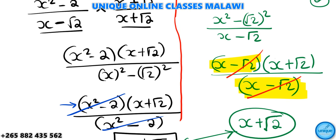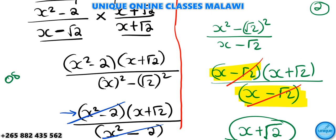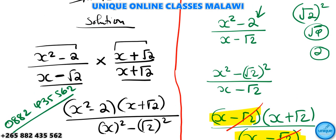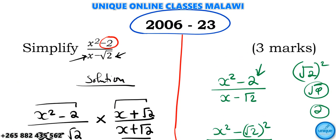My number is 0882435562 — that's my sub number. If you have any question in any subject, you can also be a member of Unique Online Classes in Malawi. Don't forget to like my Facebook page Unique Online Classes Malawi, as well as subscribing to my YouTube channel Unique Online Classes Malawi. Free marks — I wish you the best.